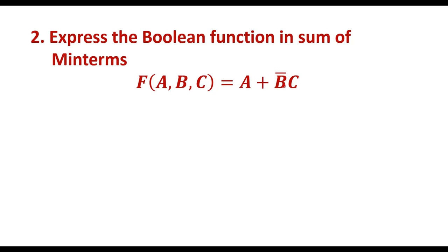Now let me consider the second function: f(a,b,c) = a + b̄c. This is in SOP form — sum of product form. We need to express this in sum of minterms. A minterm is a product term that consists of all the variables. In this SOP, we have two product terms: 'a' has b and c missing, and 'b̄c' has 'a' missing.